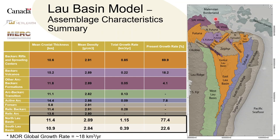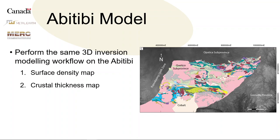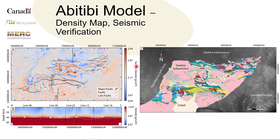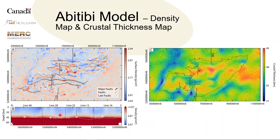Now moving over to the Abitibi. I was looking to do the same workflow — the same type of 3D gravity modeling in the Abitibi — to get both a surface density map and a crustal thickness map. Here's the plan view for the density map through the Abitibi. To check it against seismic to make sure the model is working okay, I used the LITHOPROBE transect — this piecewise north to south transect passing through — with the MOHO from LITHOPROBE as a dotted white line, the MOHO from the model in black, and the crust 1.0 model as dots. I think that fits quite well. From that, you can subtract the MOHO elevation from topography data to get a crustal thickness map of the Abitibi.